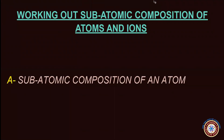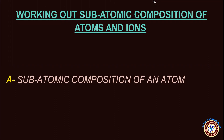This video lecture is about deducing the number of protons, neutrons, and electrons in atoms and simple ions by using proton number and nucleon number. There are three subatomic particles which mainly constitute atoms, and the set of these three subatomic particles for an atom is called its subatomic composition.